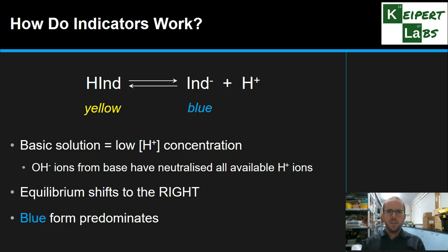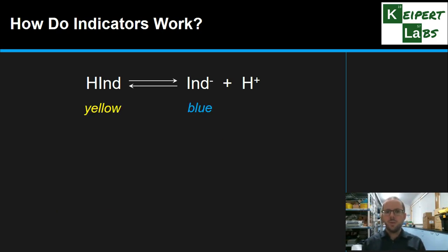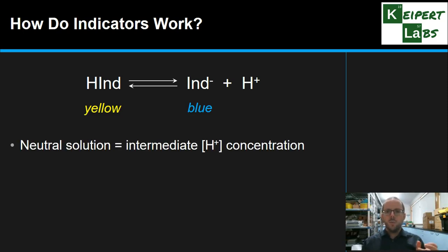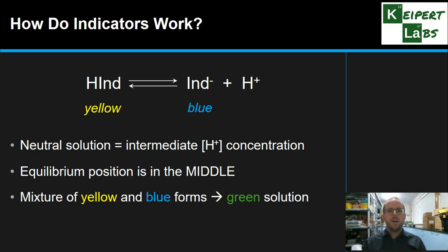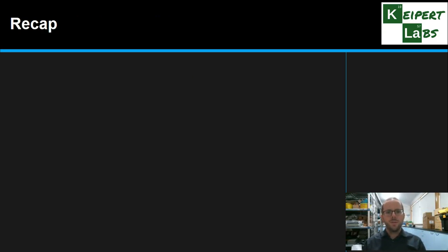What about if it's neutral — neither acidic nor basic? We've still got yellow and blue versions but an intermediate H+ concentration — some of it, not heaps, not very low. The equilibrium position is in the middle, not shifted left or right, giving fairly equal amounts of both. Equal amounts of yellow and blue make a green solution. So green tells us when we've reached the tipping point between the two colours, and that can be very useful to look for.